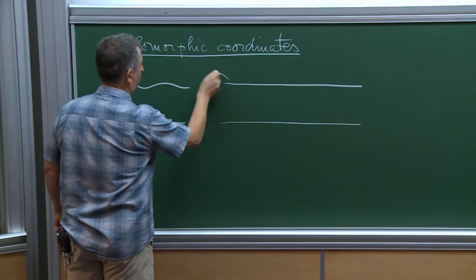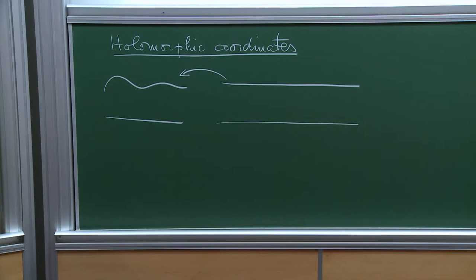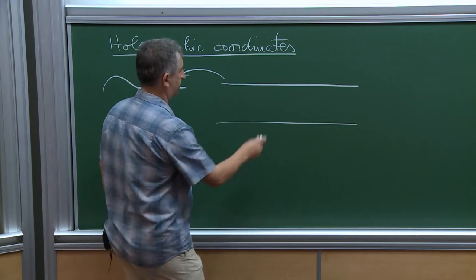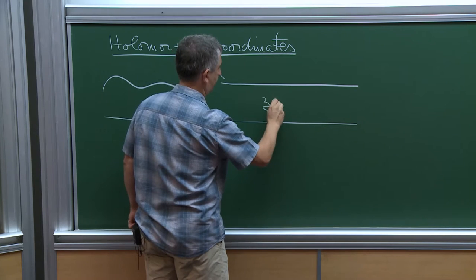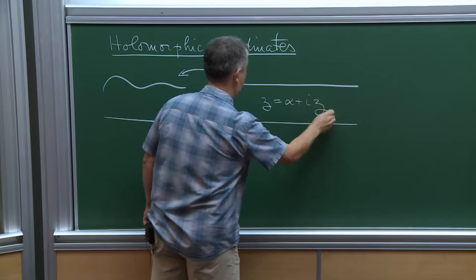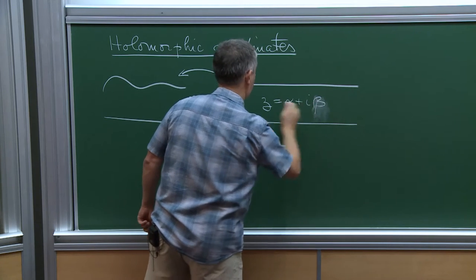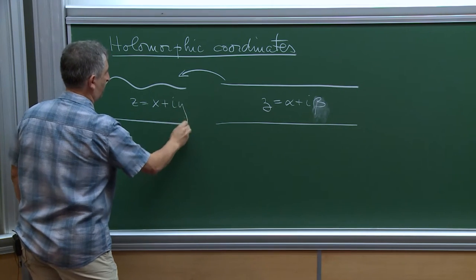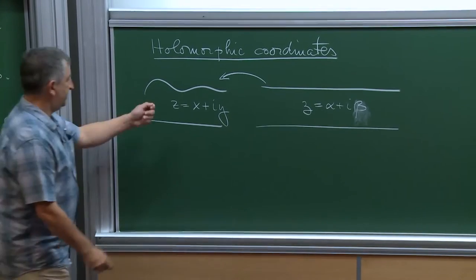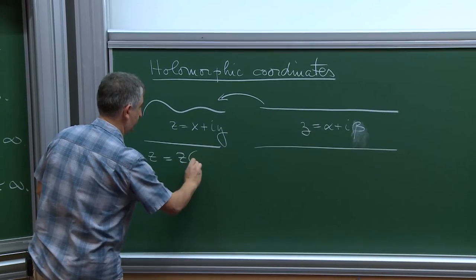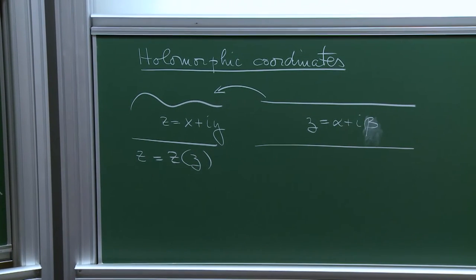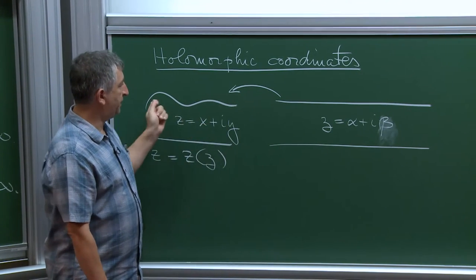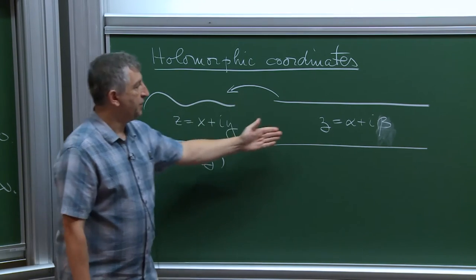By the Riemann mapping theorem you can find a conformal map between these two domains, and the main point is to diagonalize the Dirichlet-to-Neumann map. We're looking at maps that take the bottom to the bottom and the top to the top. In the finite bottom case you have one degree of freedom — horizontal translations. In the infinite bottom case you have two: horizontal translations and scaling.